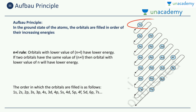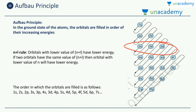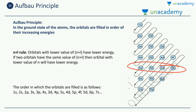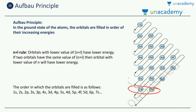In the Aufbau diagram, the first level is the first orbit with only 1s. The second orbit has 2s and 2p. The third has 3s, 3p, and 3d. The fourth has 4s, 4p, 4d, and 4f. The fifth has 4 orbitals, the sixth has 3, and the seventh has 2. These are all the possible orbitals.